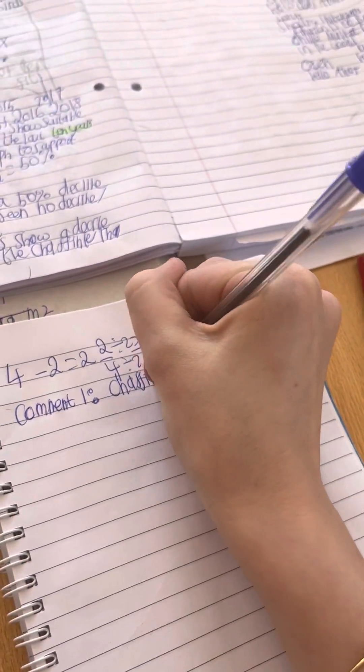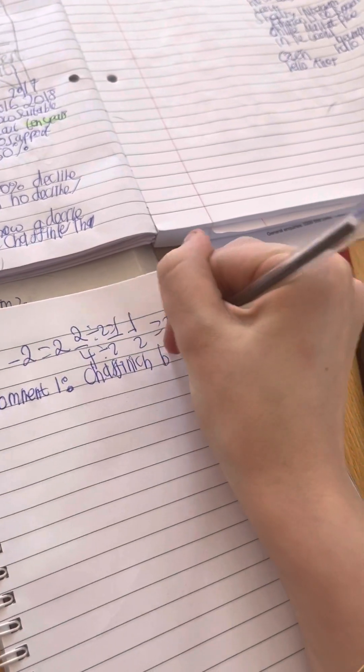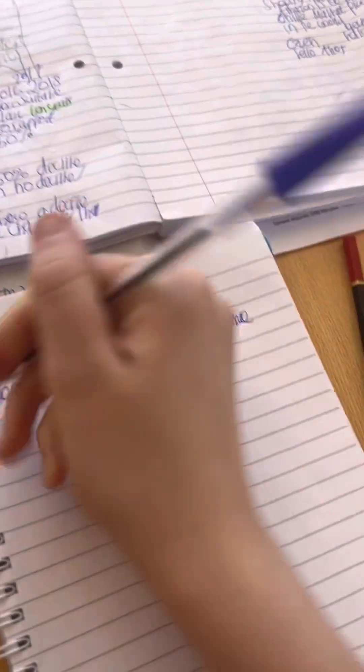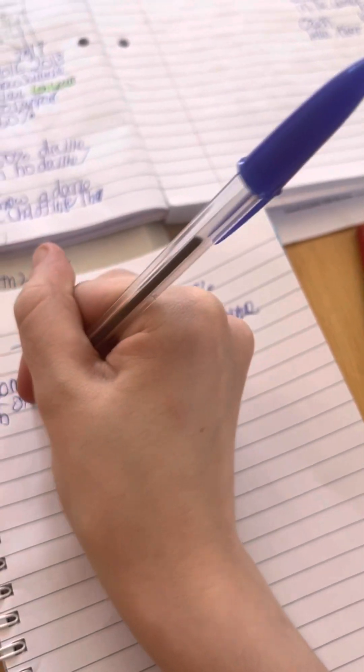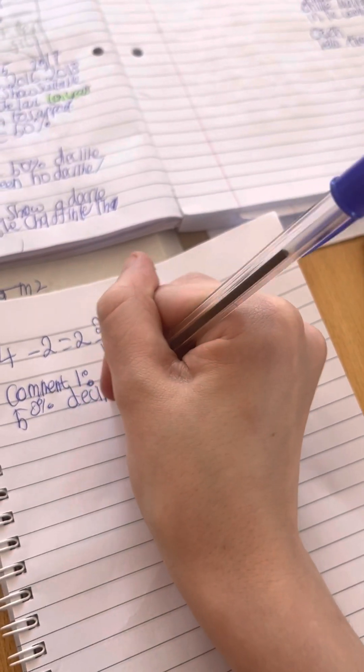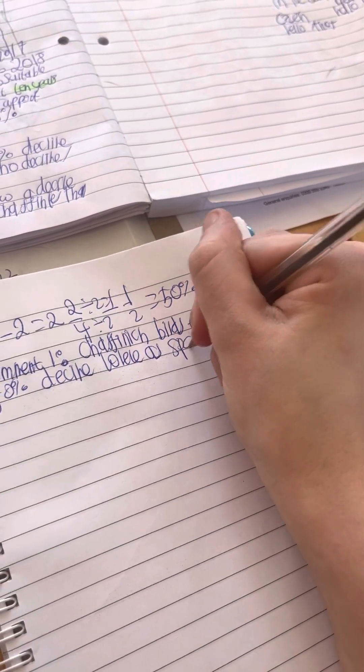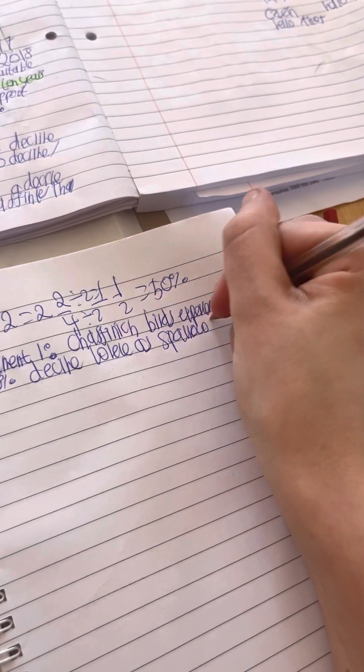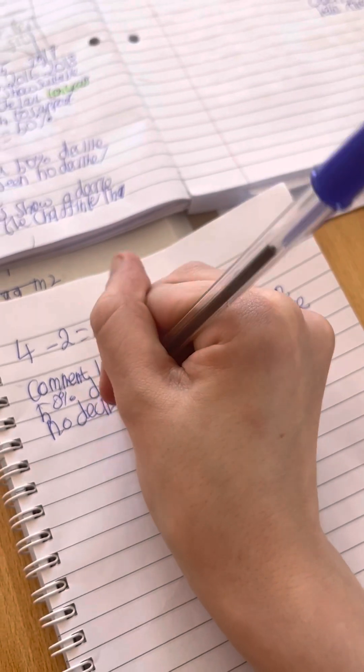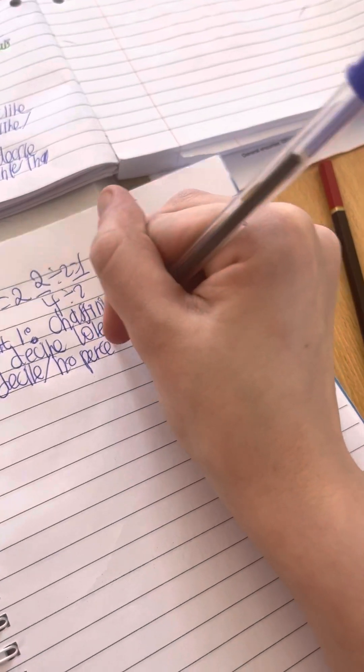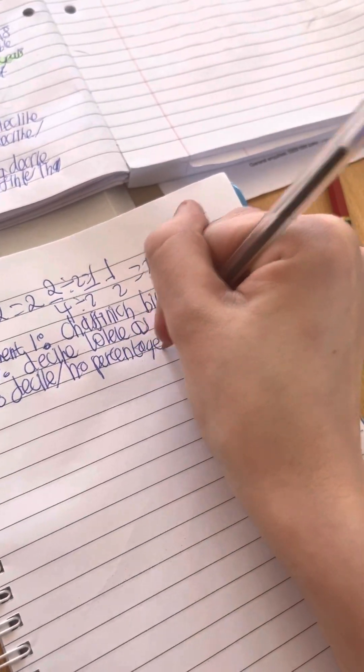So comment 1 is chaffinch birds experience a 50% decline, whereas sparrows have no decline, no percentage change. Or you could say no percentage has changed.